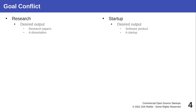Research and startups at first glance don't go together well. Research has as its output research papers and a dissertation — that is not code and not validation of a business model. There is no business model; you want to publish research results. A startup, on the other hand, is in search of a viable business model — filling out the business model canvas with validated hypotheses, determining a value proposition, building a product, and getting it to customers. Ultimately the goal of a startup is a well-working organization.